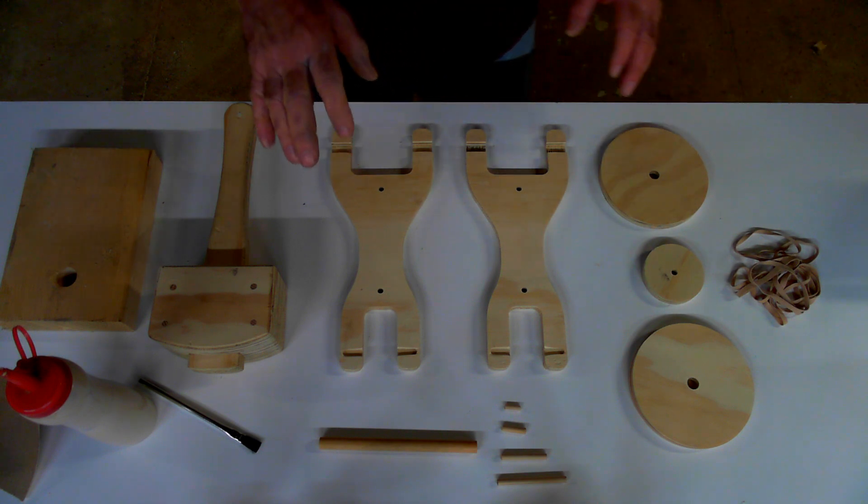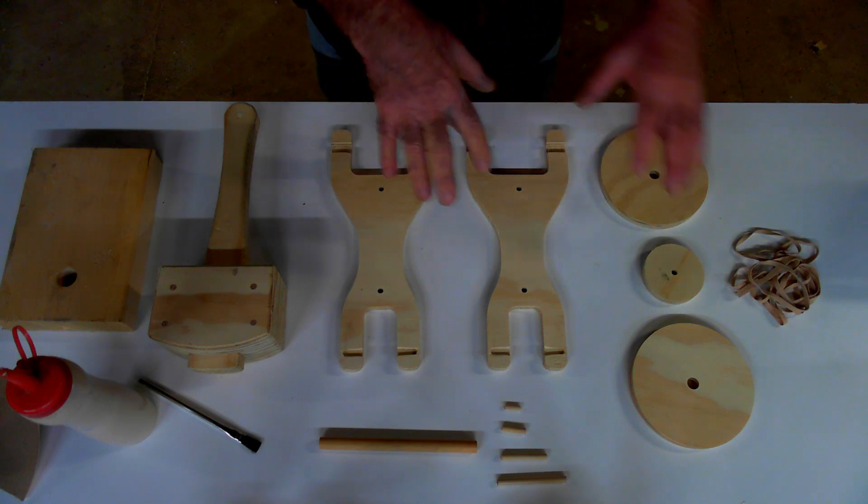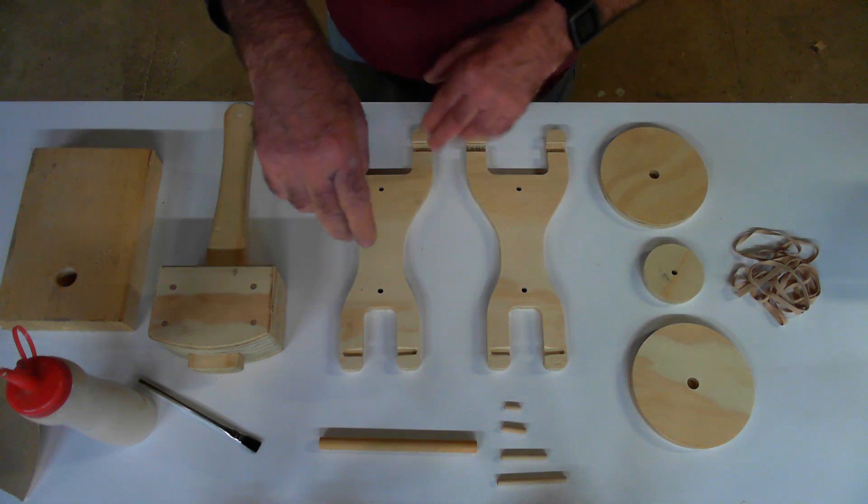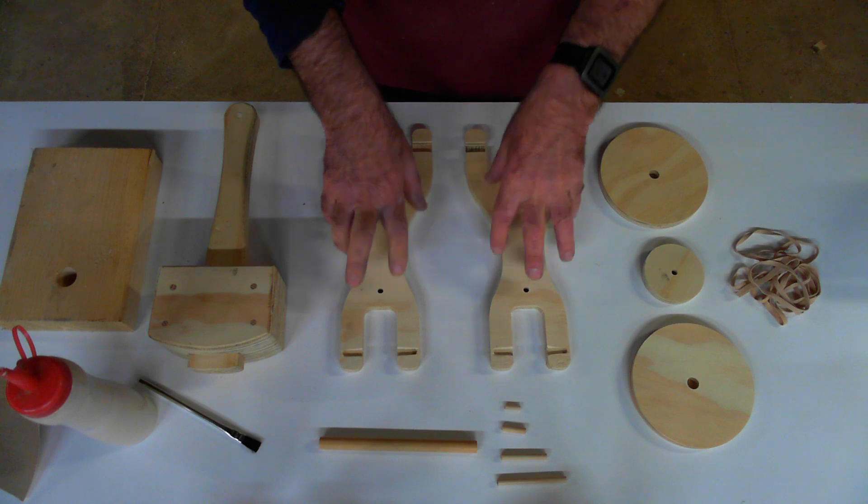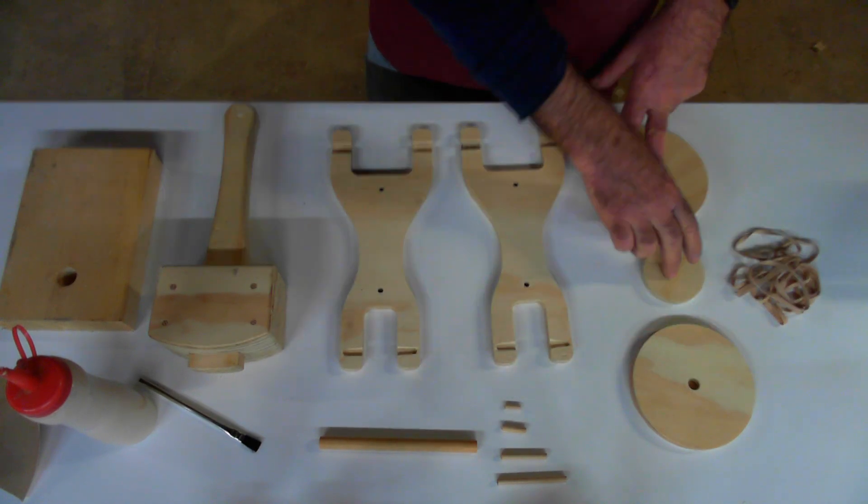So this is all the parts you need. These are the pieces that are cut with the CNC machine, with the ShopBot. So we've got two racer halves, you've got two back wheels, and a front wheel.